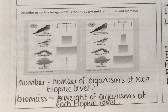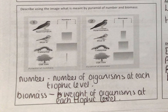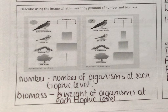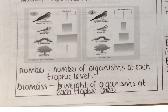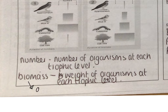Describe using the image what is meant by a pyramid of number and biomass. A pyramid of number tells us the number of organisms at each trophic level, and the biomass tells us the dry weight of the organisms at each trophic level. Remember that a pyramid of number can be inverted, whereas a pyramid of biomass will always be a triangle shape.